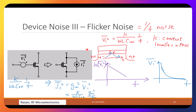The last noise source to discuss is flicker noise, also called 1/f noise. The power spectral density can be modeled as a gate-referred voltage noise: K divided by WLC times 1/f. Larger W and L give smaller noise. To understand why, we look at the physical cross-section of the transistor — source on the left, drain on the right — and how electrons move from source to drain.